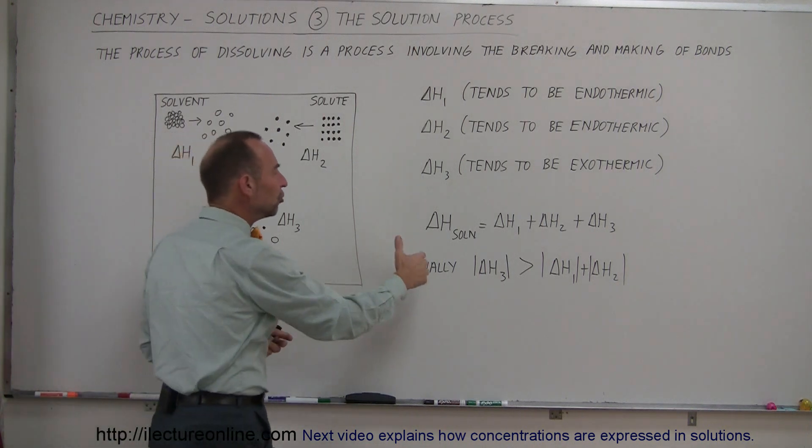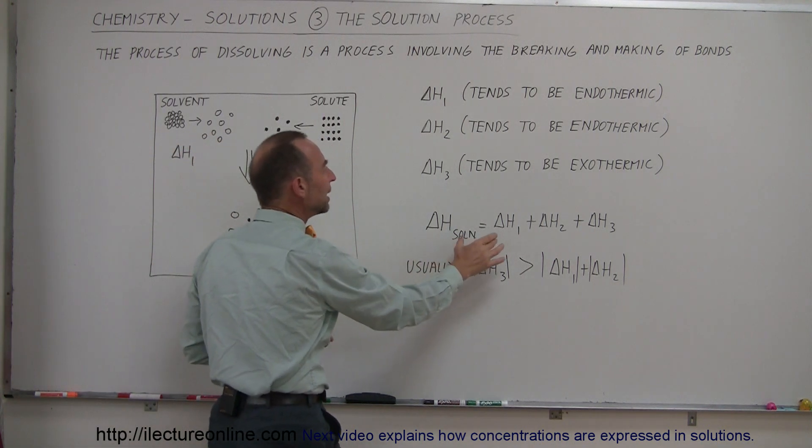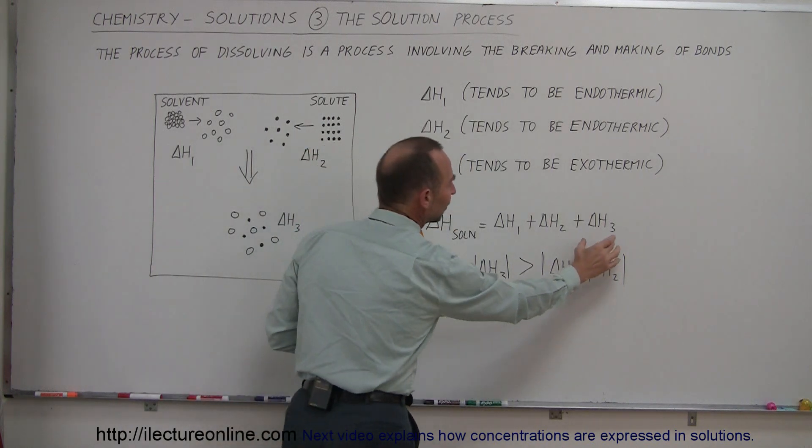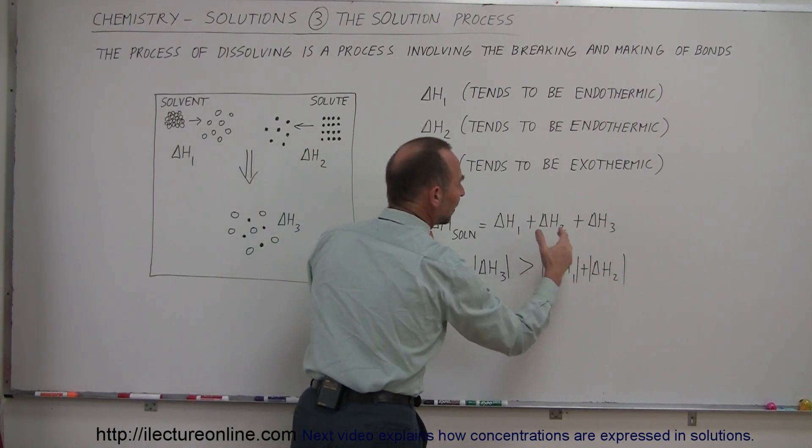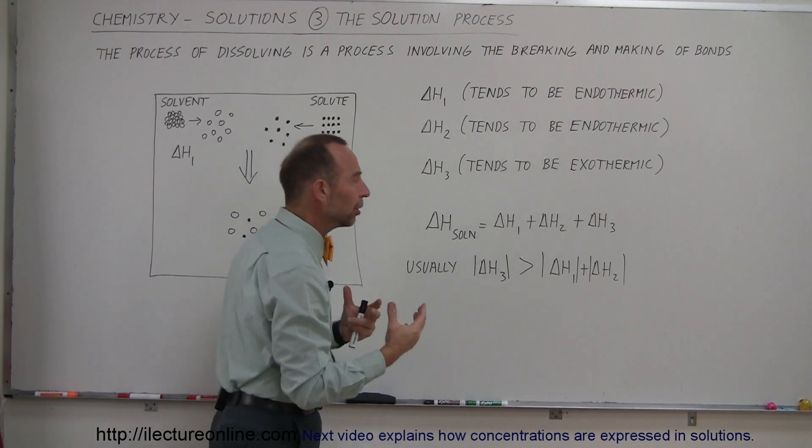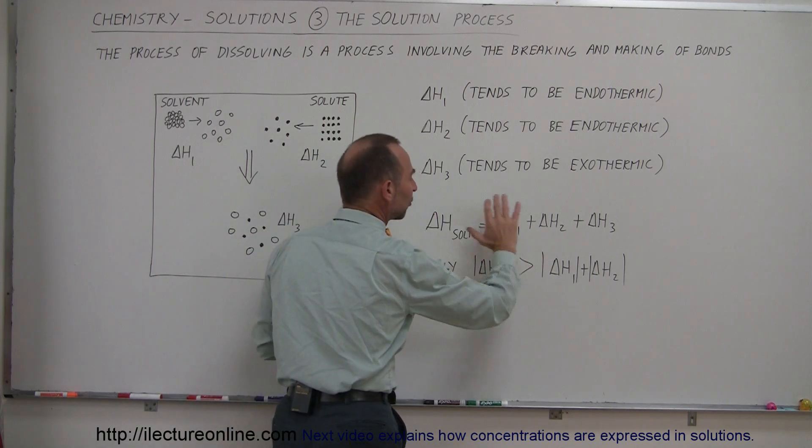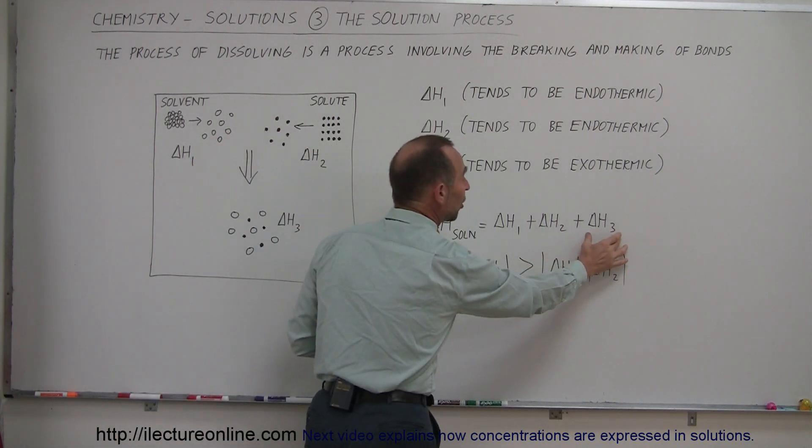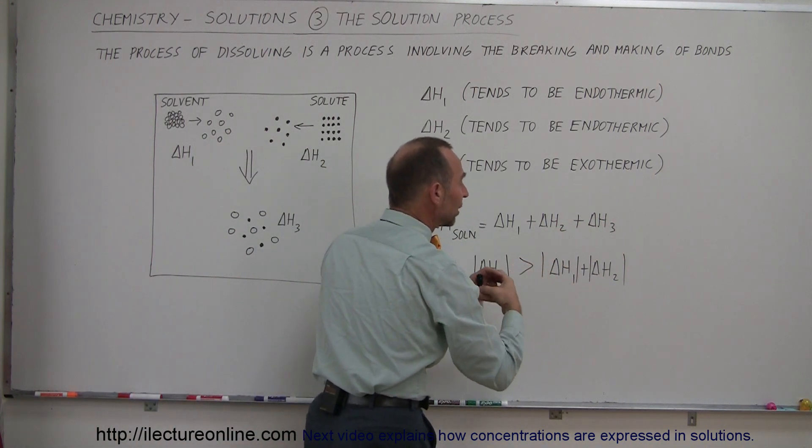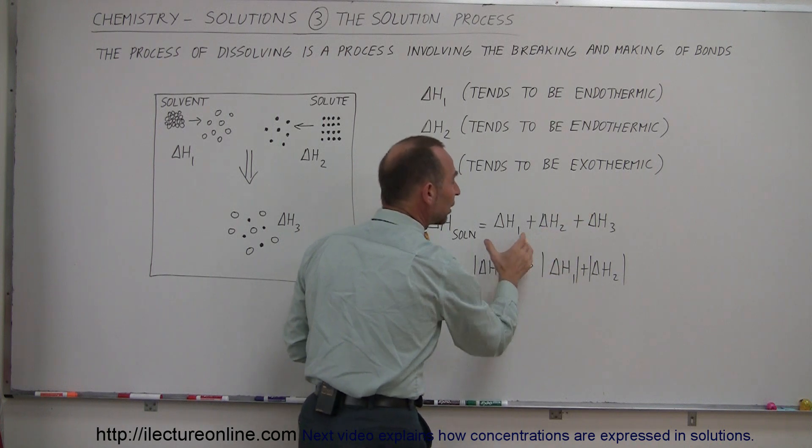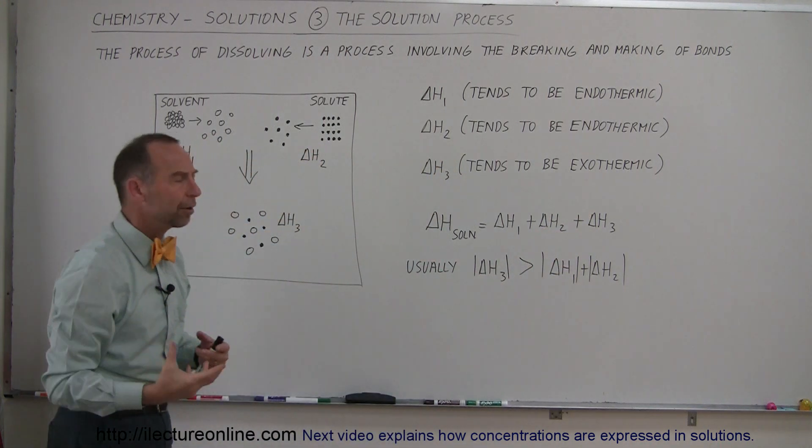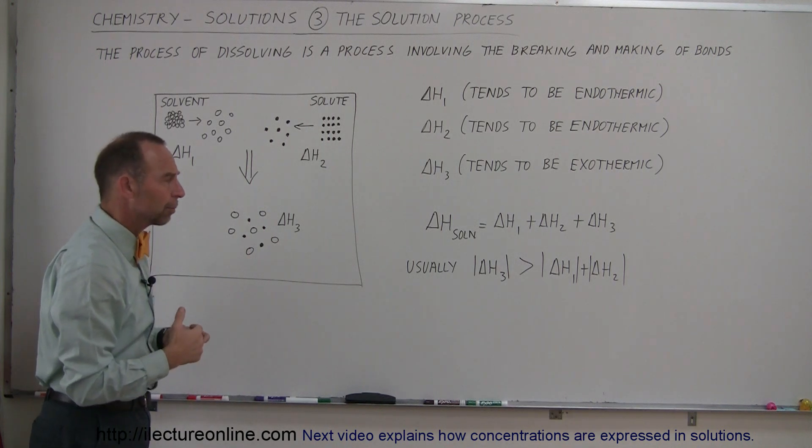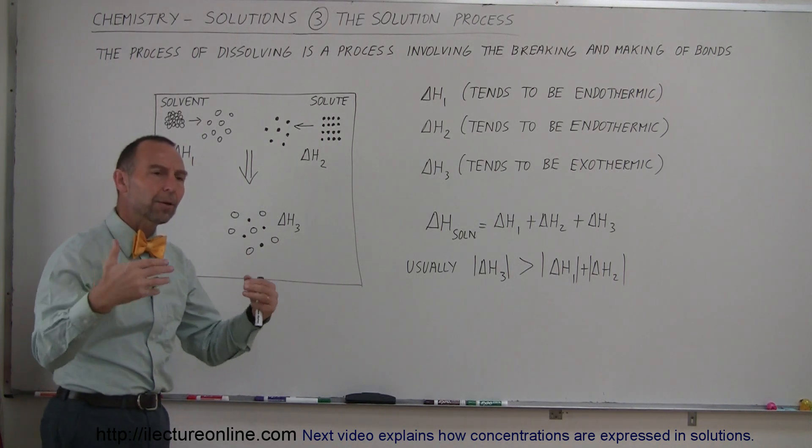So the enthalpy of solution, the energy change of the solution is simply going to be a sum of the three enthalpy changes. And of course, if delta H3 is bigger in absolute value, it's a bigger number than the sum of those two, then as a whole, it will be an exothermic reaction. If delta H3, the enthalpy change of bringing the two components together, mixing them, is smaller than the two here required to pull them apart from their initial constituents, then of course it's an endothermic process and then energy needs to get put into it.